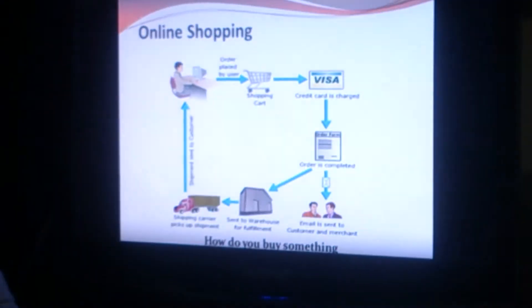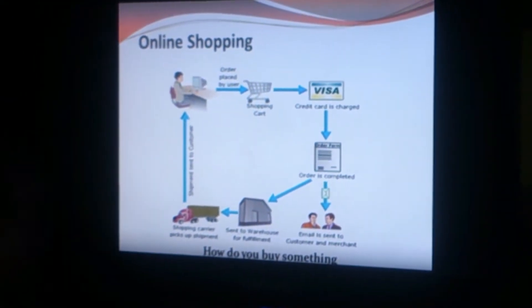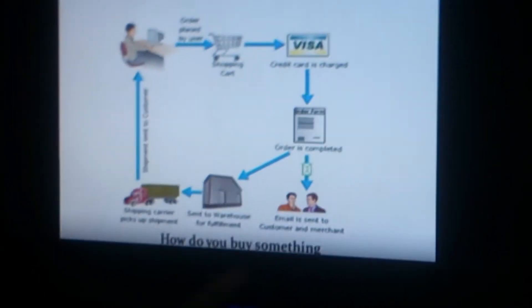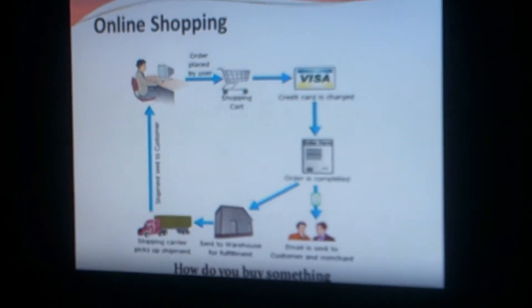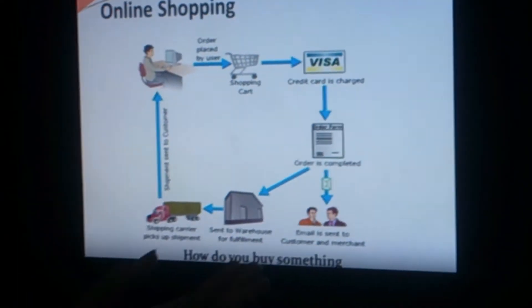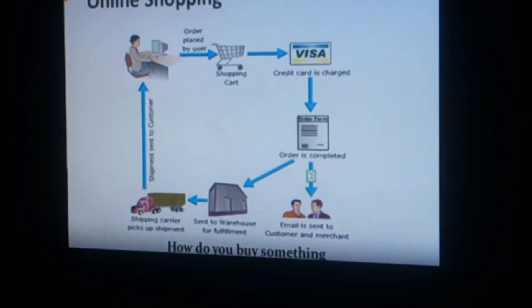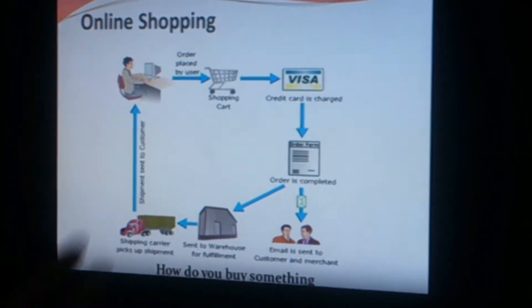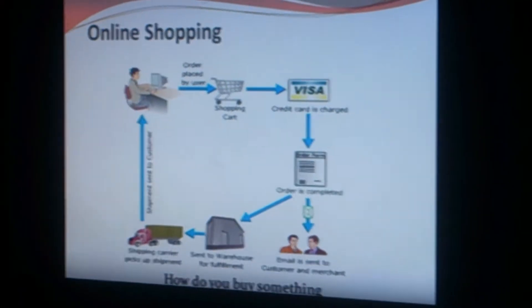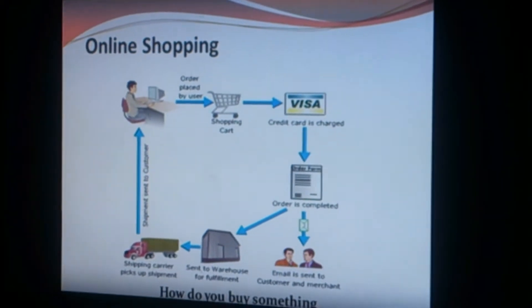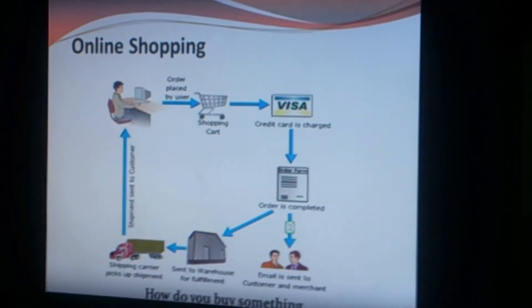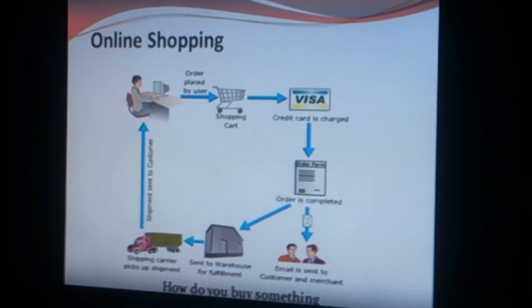Here I have shown how online shopping is done. First, the user places the order to the shopping cart. Then the credit card is charged and the order is complete. This order is sent to the merchant, and that merchant sends the order to the warehouse. The many orders make up a truck load of products, which then goes directly to the customer's house for delivery.